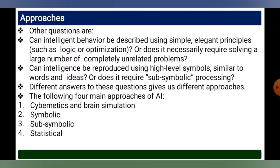Other questions include: can intelligence be described using simple, elegant principles such as logic or optimization, or does it require solving a large number of completely unrelated problems? Can intelligence be reproduced using high-level symbols similar to words and ideas, or does it require sub-symbolic processing? The main approaches of AI are: cybernetics and brain simulation, symbolic, sub-symbolic, and statistical.